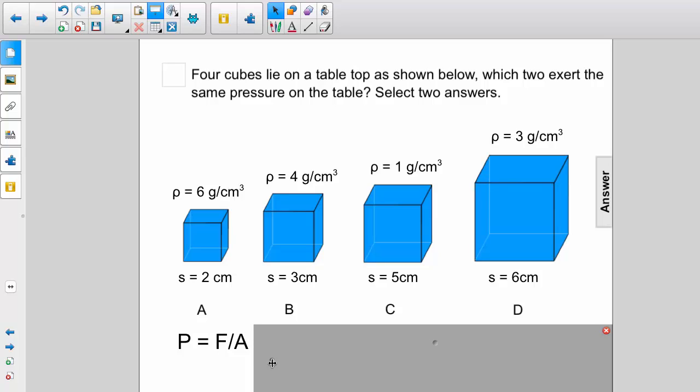Now the force is given by the weight of the object. So we introduce mg for F and we have pressure is mg divided by area.